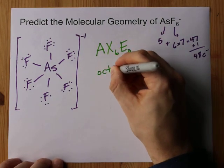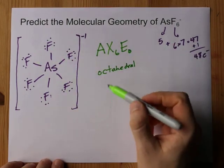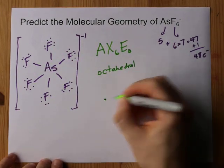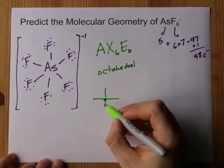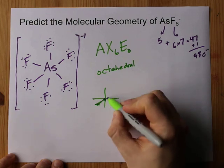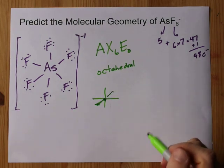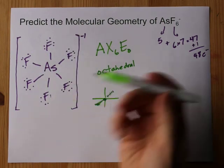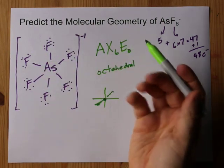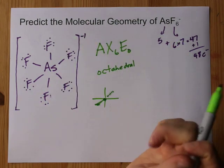AX6, by definition, is an octahedral molecule. Because how far apart can six things get around a central atom? Well, going side to side, up and down, and then out towards you, and out in behind you. Great. It's an octahedral geometry. The electron geometry is also octahedral, because there's no lone pairs. And no lone pairs means molecular and electron geometries are the same.